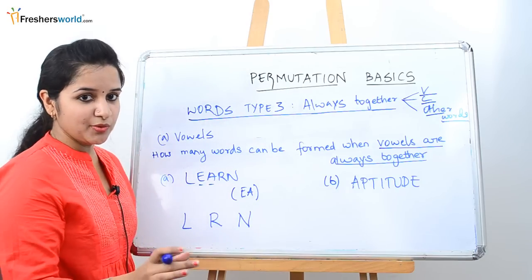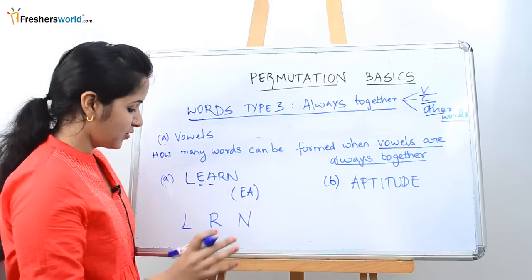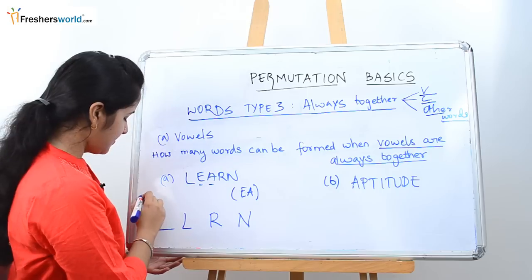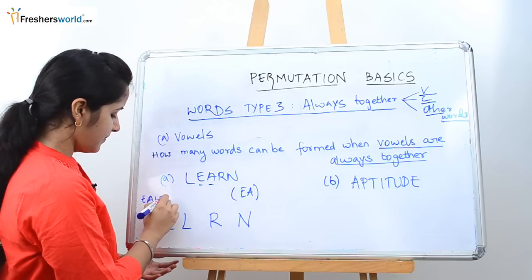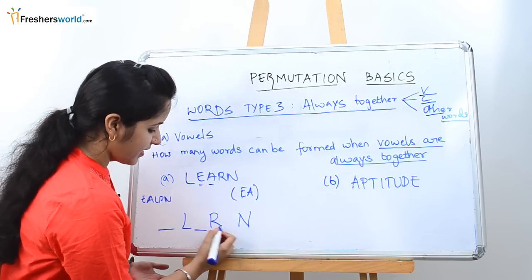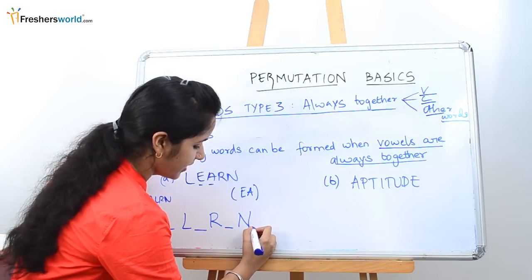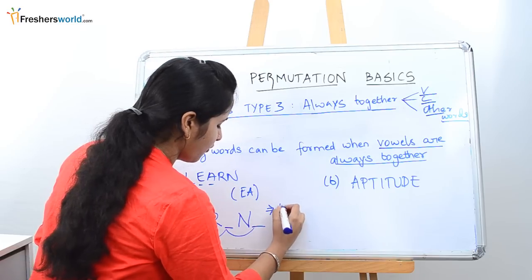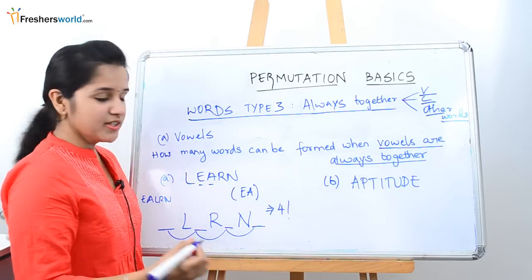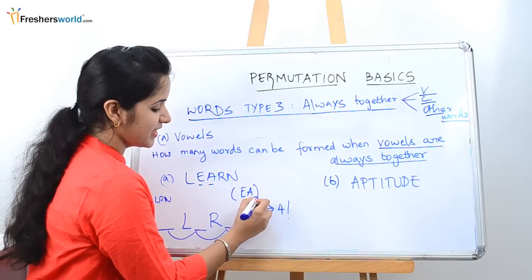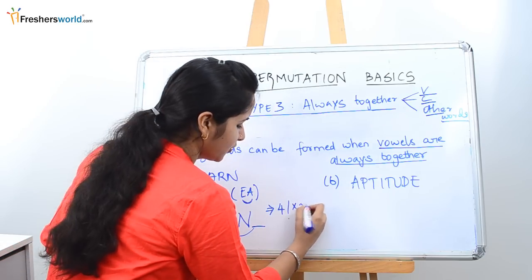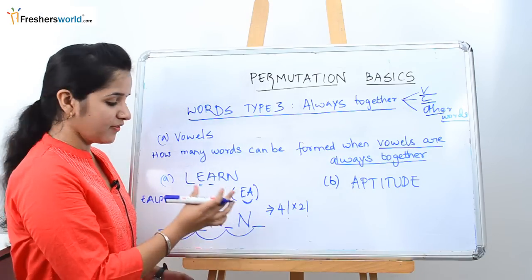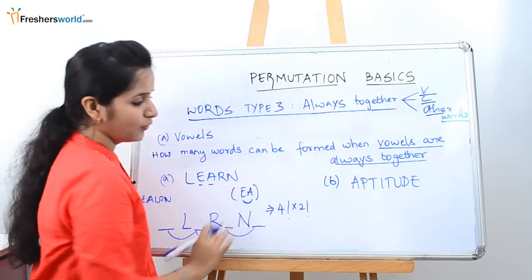EA will always be together. They are not saying where it should be. So what are the various places in which it can be arranged? Either it can be arranged in the front — E, A, L, R, N — or in between L and R, or between R and N, or after N. So there are four spaces, which is nothing but 4 factorial. And the arrangement between these two vowels — EA or AE — can be done in 2 factorial ways. So how many words can be formed using the word LEARN? It is 4 factorial into 2 factorial.